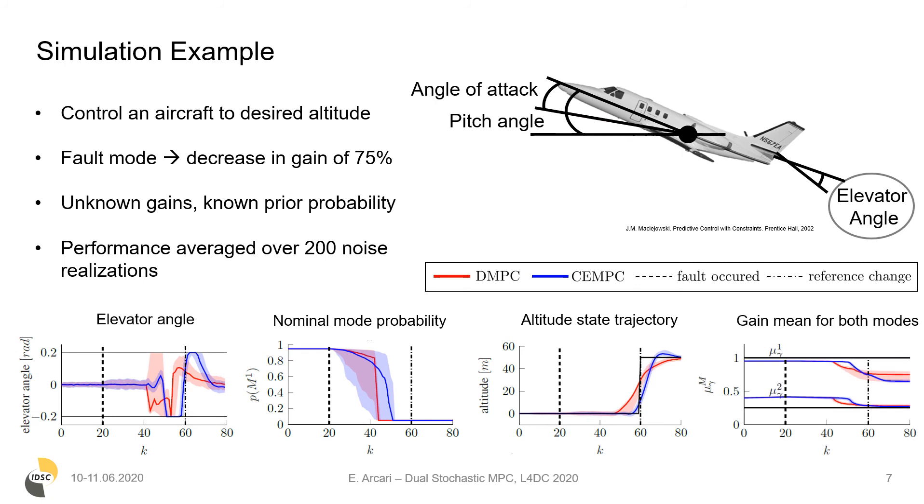The dual MPC bimodal distribution, defined by the two gains, starts to adapt due to the introduced excitement at k equal to 40 towards the true gain associated with the fault mode, which is active at the reference change.